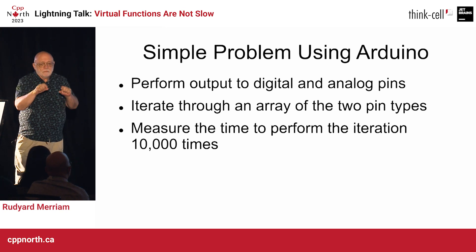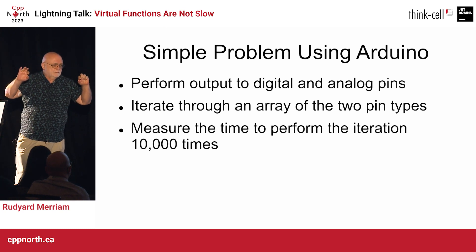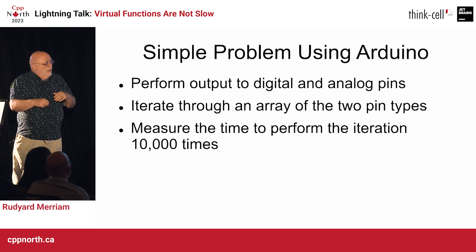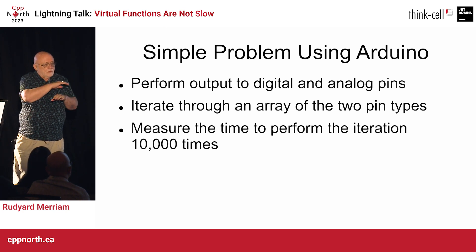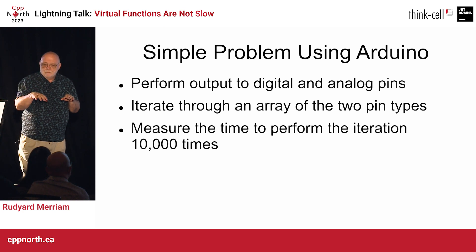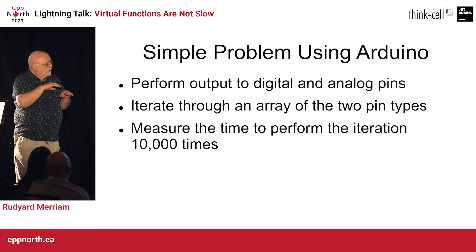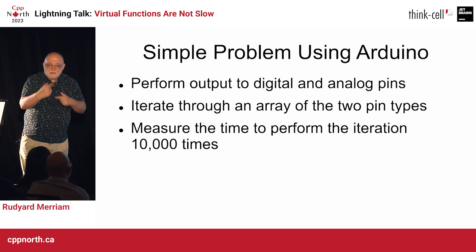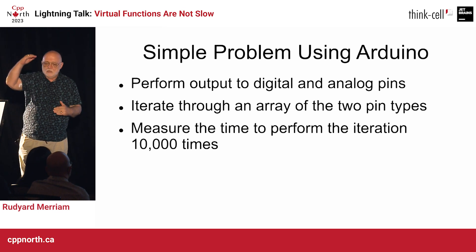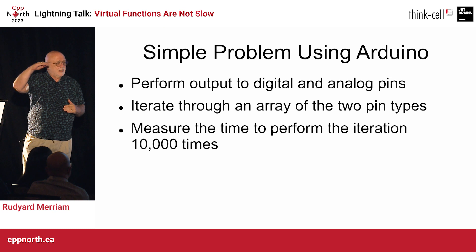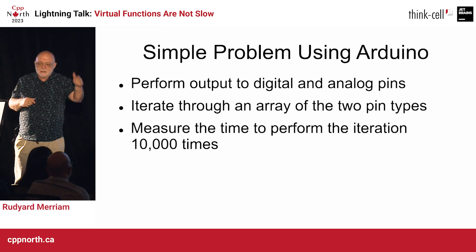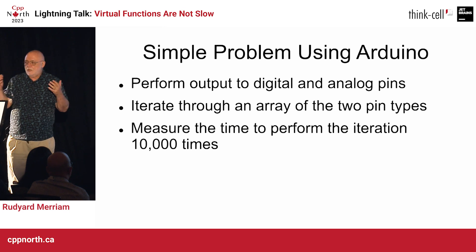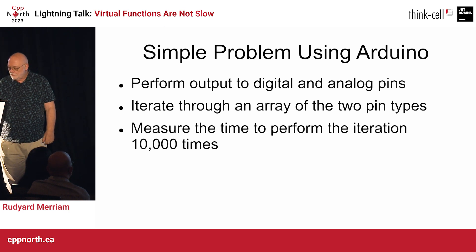We'll make a list of about 16 pins, alternating digital and analog, and iterate through that list just as we would do at the end of the output cycle to get the output set. We'll do that iteration 10,000 times to get a nice long period of time that we can divide to get roughly the time it takes to go through the overall list.